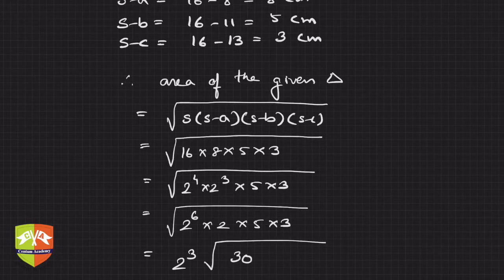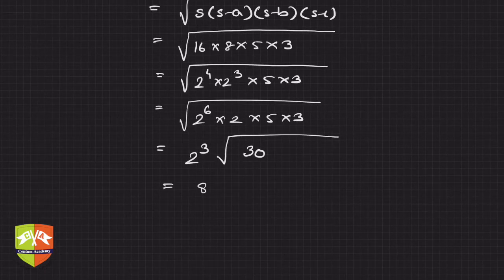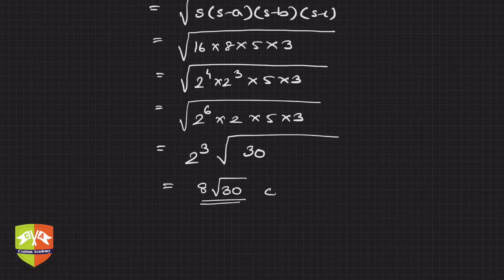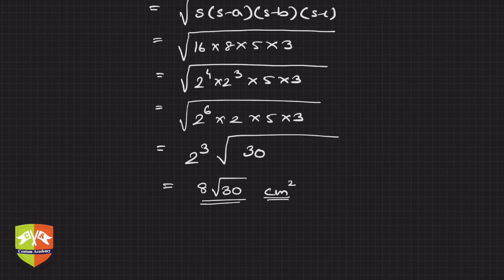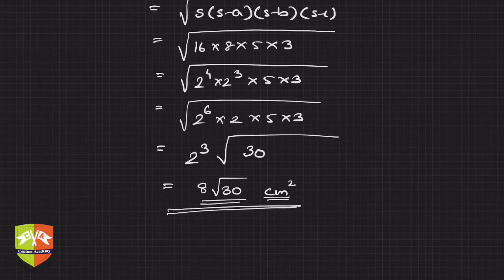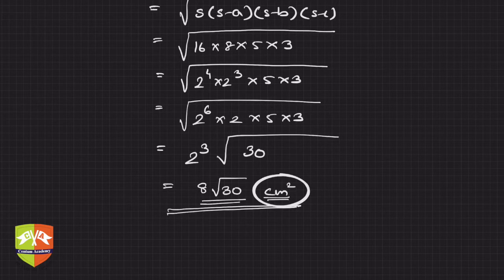So hence area is 8 root 30 centimeter square. Why centimeter square? Area unit will be meter square or centimeter square or inch square or any dimension of length square. Since the values were given in centimeter, the unit is centimeter square. Please do not forget to mention the units.